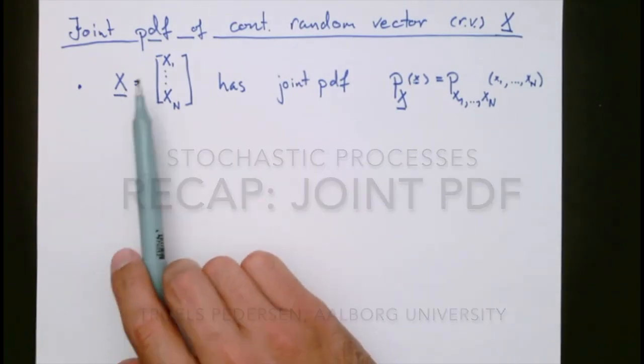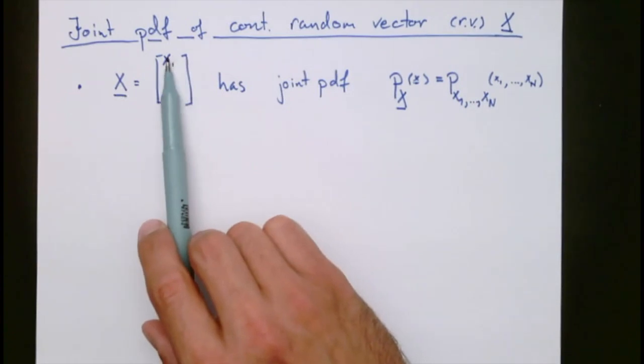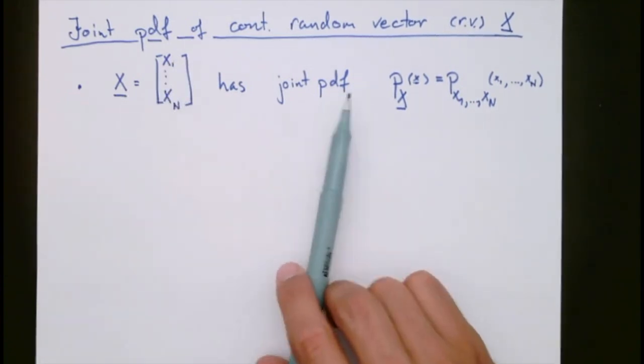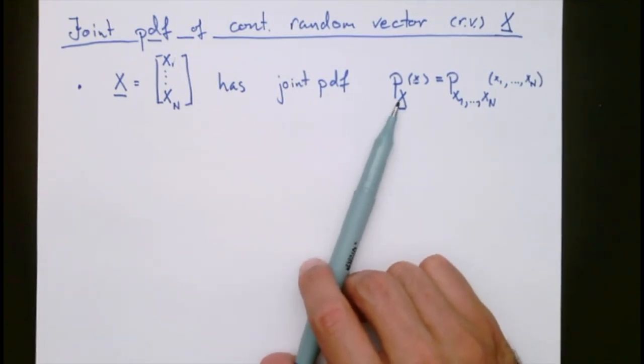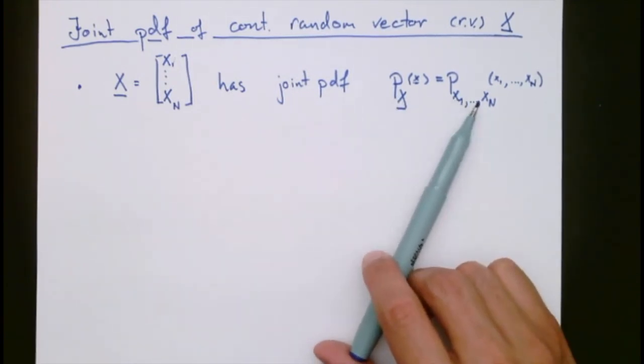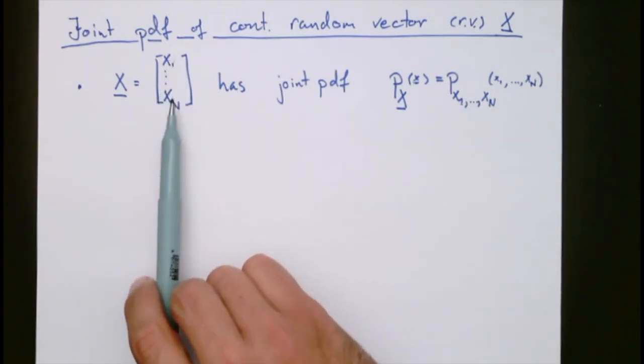A continuous random vector x with entries x1 through xn has a joint PDF, which we denote by px, where x is a vector, or px1 up to xn, where each of these are the scalar entries.